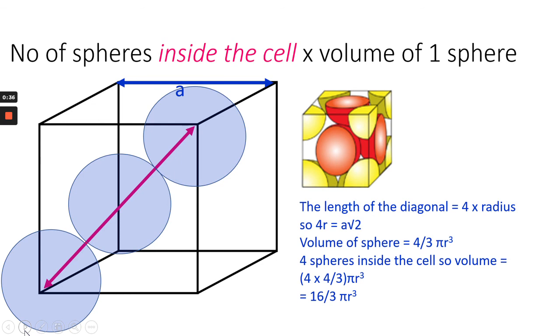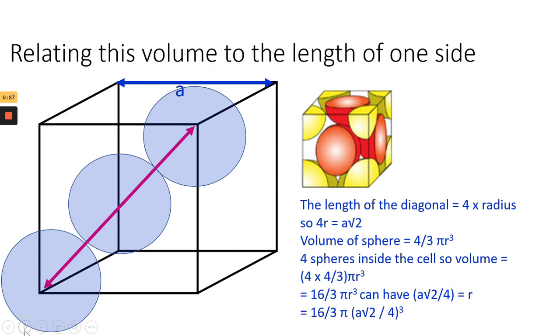The volume of the sphere is 4 thirds pi r cubed. So four spheres inside the cell, so the volume of the atoms inside the cell is 16 over 3 pi r cubed. If we take the length of one side, which we worked out as A root two, that's 16 over 3 times pi in brackets A root two over four cubed.